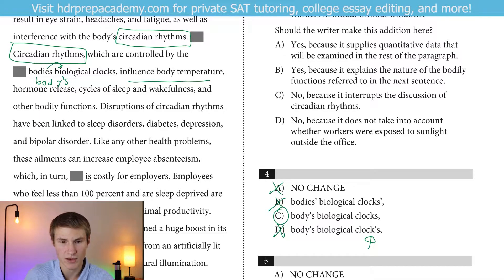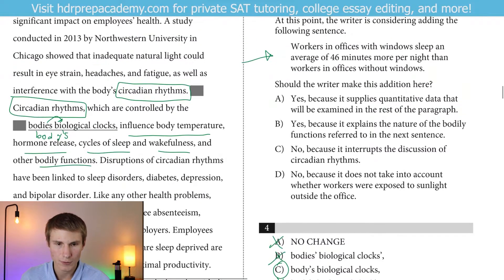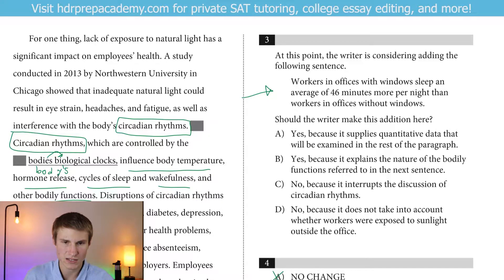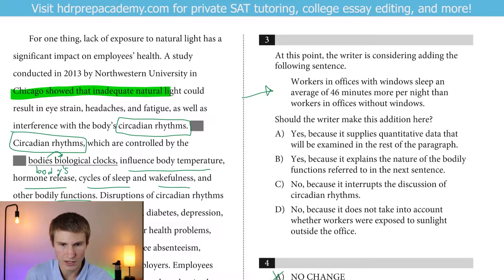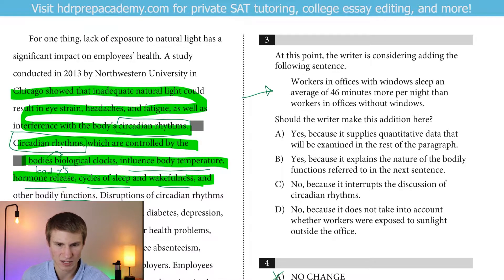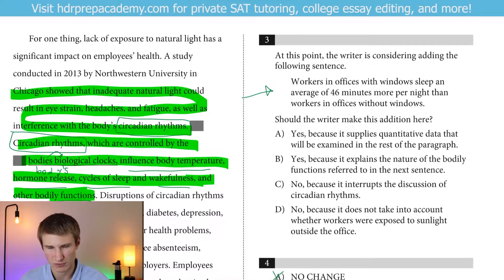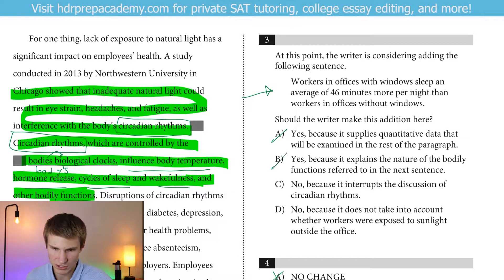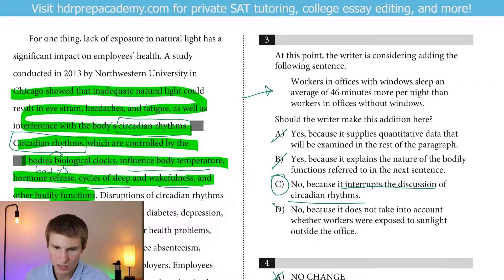And then the biological clocks influenced body temperature, hormone release, cycles of sleep and wakefulness, and other bodily functions. Now we can go back and answer question 3. We see that both the sentence before and after where we're considering adding this are ultimately talking about circadian rhythms. We don't want to interrupt that by adding in this fairly random fact — even though it's slightly related, it's too random and interrupts our discussion. So we shouldn't make the addition. Option C — no, because it interrupts the discussion of circadian rhythms. That's perfect.